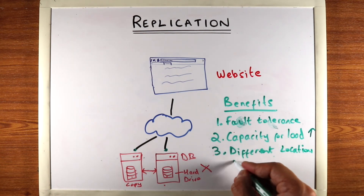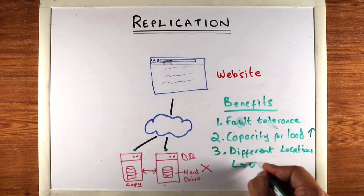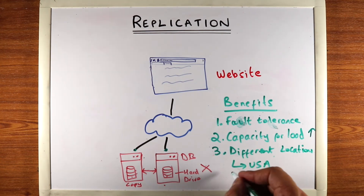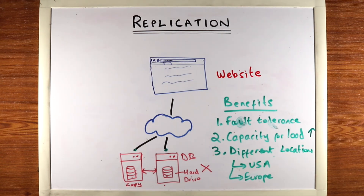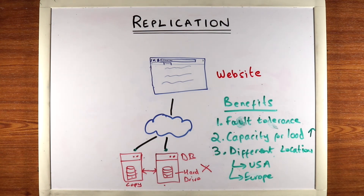A third benefit for large applications is that the two machines can be in different locations — for example, one in the USA and one in Europe. Users from Europe can read from the Europe copy, which improves locality and helps with response times. So that was a quick intro to replication and why it's useful in backends.